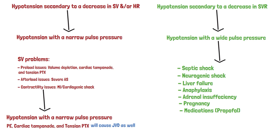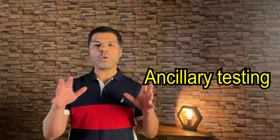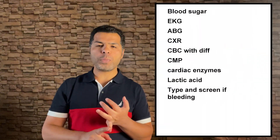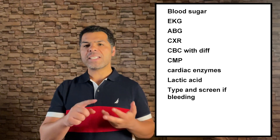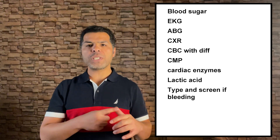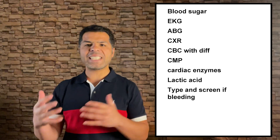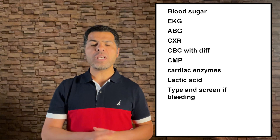With the obtained history, focused physical exam including JVD assessment, and pulse pressure recognized, we can greatly reduce our differential to one or two problems. Here comes the role of ancillary testing. For all these patients I get a stat blood sugar, stat EKG, stat chest X-ray, ABG, CBC with differential, CMP, cardiac enzymes, lactic acid, and type and screen if bleeding is suspected. Further workup may include stat echocardiogram, stat chest CT if PE is suspected, or stat CT abdomen if acute abdomen is suspected. Remember, the patient needs to be stable enough to undergo CT or MRI.